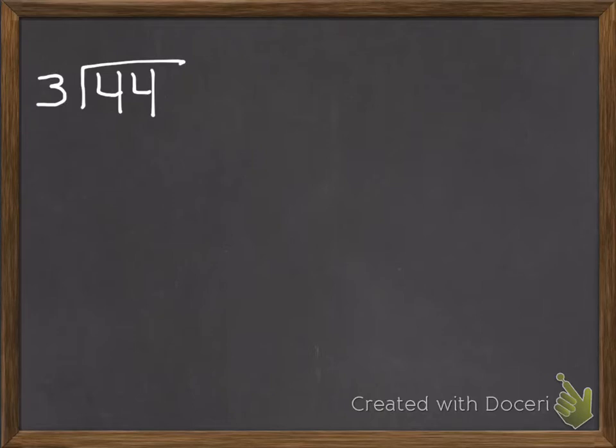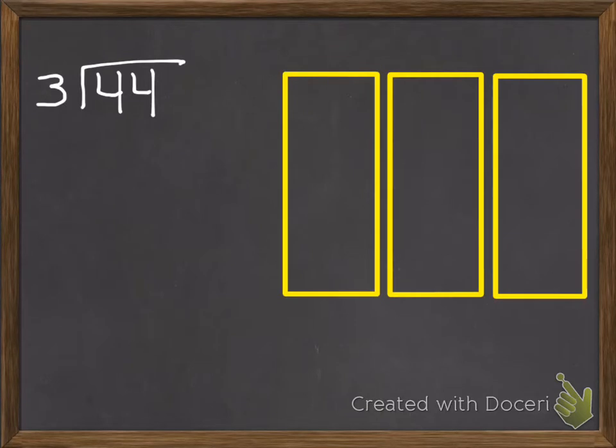So we have 44 divided by 3. So that means we're going to have 3 groups and we're going to divide those 44 between them. Just like before, we start with our tens. So we have 4 tens. So I need to know how many tens I can put in each group.